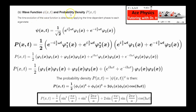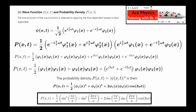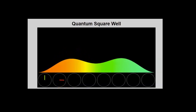Part B also asks us to compute the probability density as a function of time. Since we know how to do this from Part A and we've now found the wave function for all time, we take the complex conjugate of psi — changing the sign in front of all i's — and multiply it by the original wave function. Because phi1 and phi2 are real, their complex conjugates are themselves. Working through the math, the terms e to the i 3 omega t plus e to the minus i 3 omega t simplify to 2 cosine of 3 omega t, giving the probability density for all time.